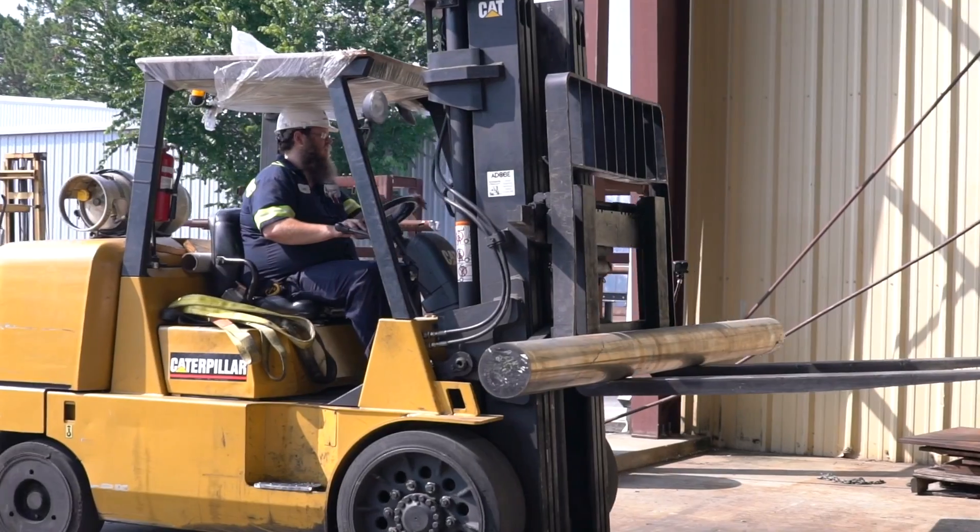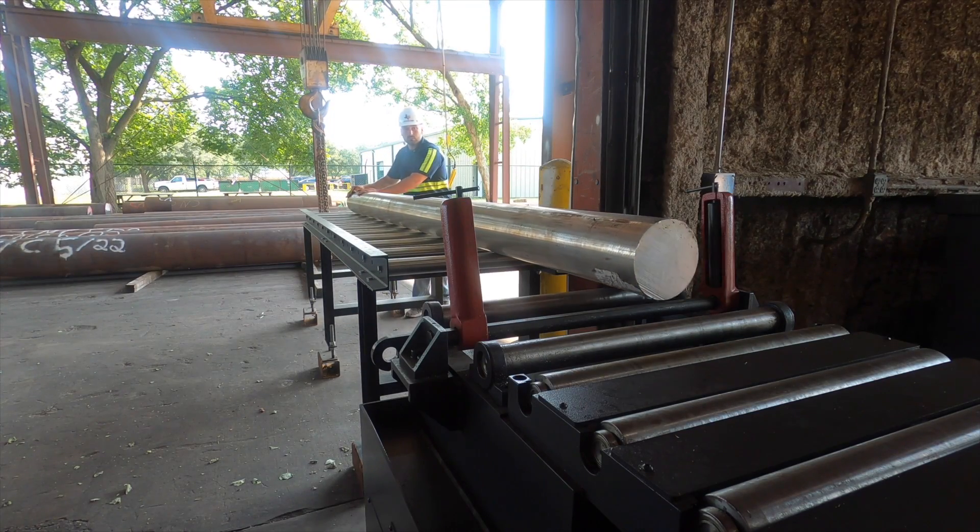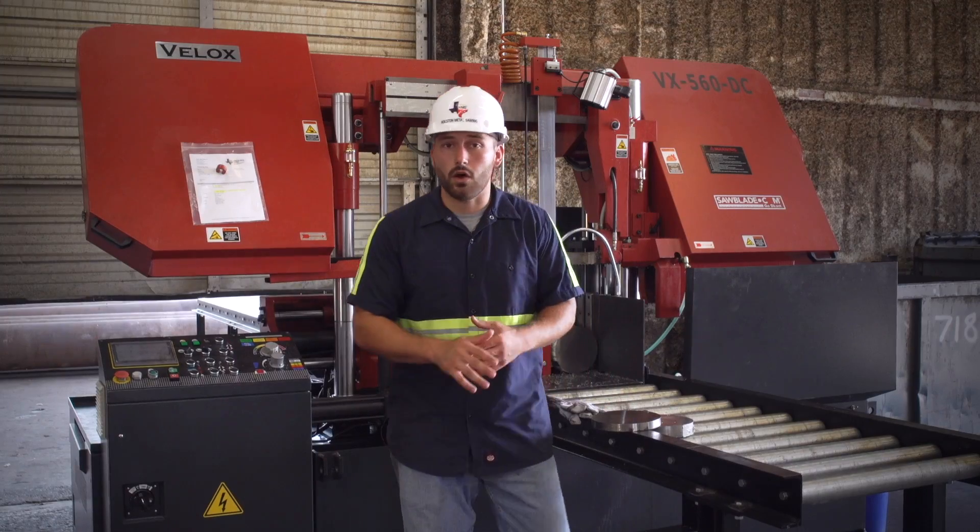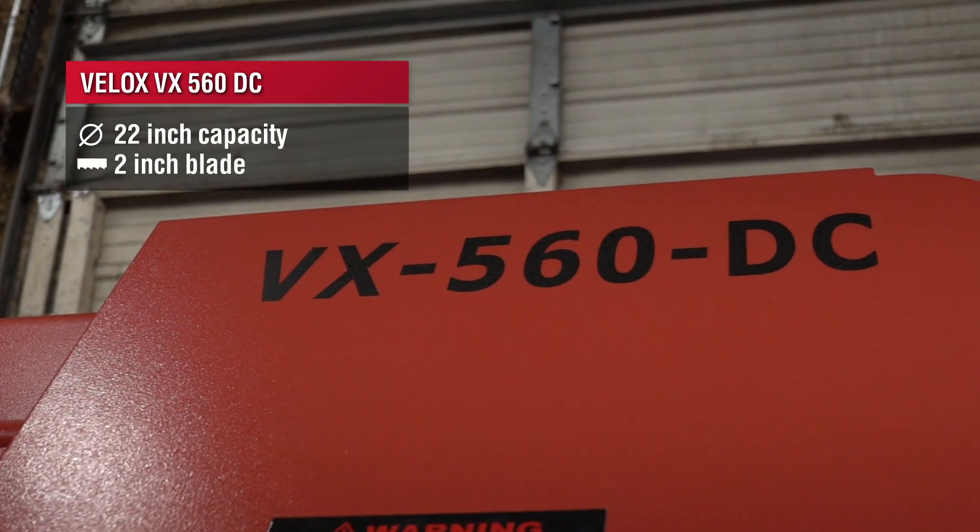Monel being such a diverse material comes in a lot of shapes and sizes but today we're going to be doing a solid 8 inch round and we're going to be cutting it on our VALOX 560 2 inch blade 22 inch capacity horizontal bandsaw.